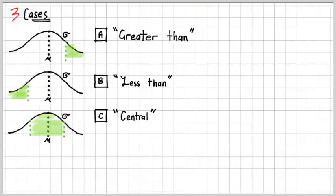We are going to be looking at three cases. Case A is the greater than case, or the right tail, as is drawn in the picture in the green there. Case B is the less than case, or the left tail. Case C is the central case.